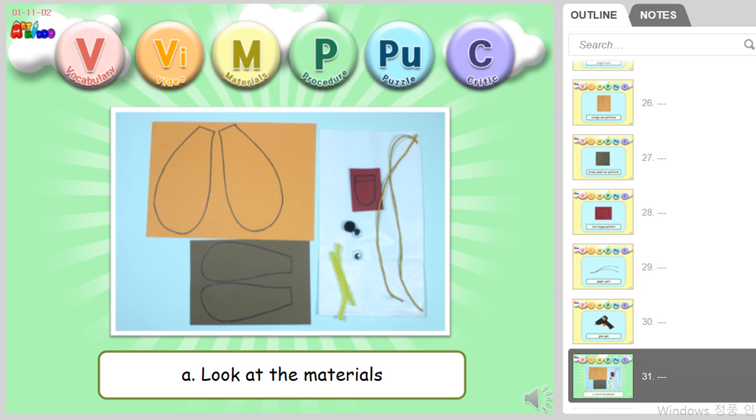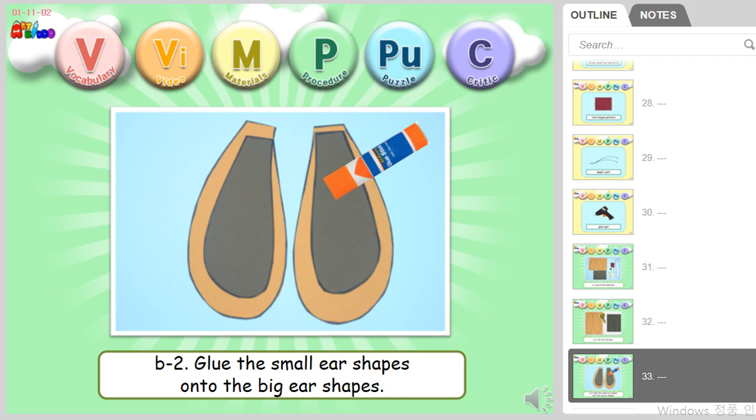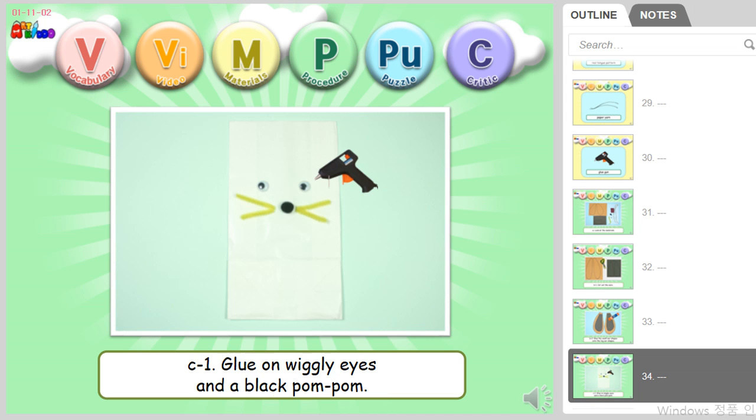Look at the materials. Cut out the ears. Glue the small ear shapes onto the base. Glue on wiggly eyes and a black pom pom.